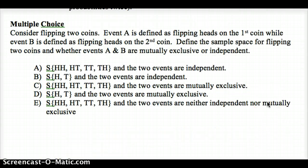Take some time to read over the lesson and some of the examples, and there's some more pictures in your book for Chapter 5, Lesson 1 and Lesson 2. Here's your multiple choice. You're flipping two coins. Event A is flipping heads on the first coin, while event B is flipping heads on the second coin. Define the sample space for flipping two coins and whether events A and B are mutually exclusive or independent. Remember, independence is not affecting each other. Mutually exclusive means they both can't happen.